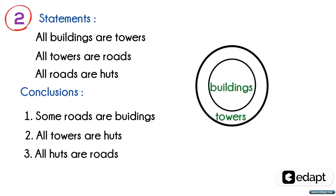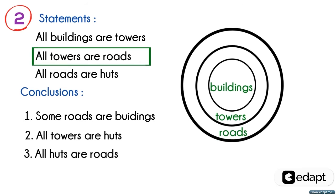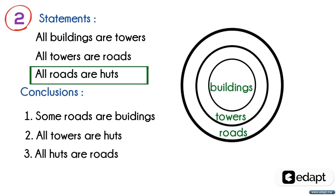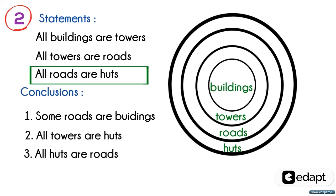For the second statement, all towers are roads — same as above — the complete portion of towers are inside the roads, like this. For the third statement, all roads are huts — same as above — the complete portion of roads are inside the huts, like this.